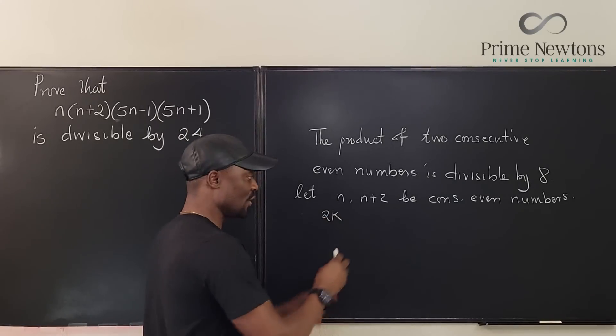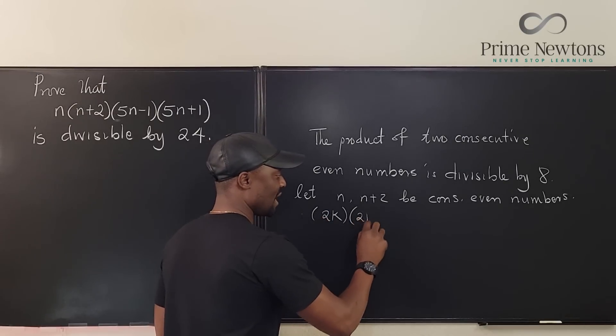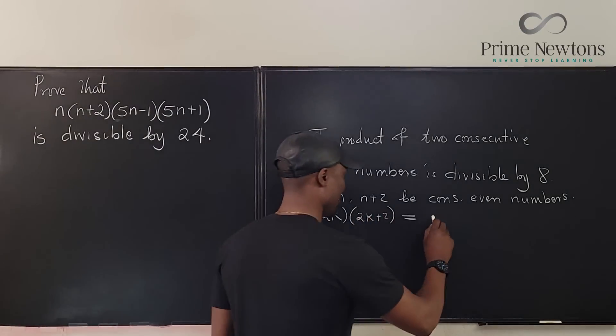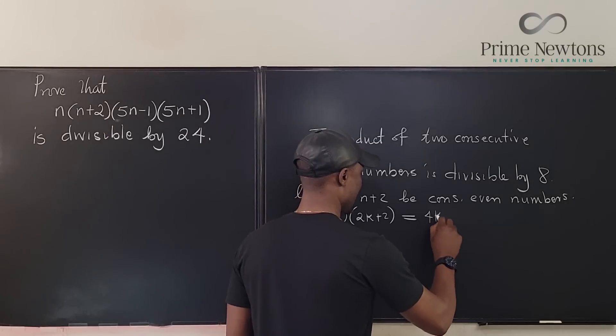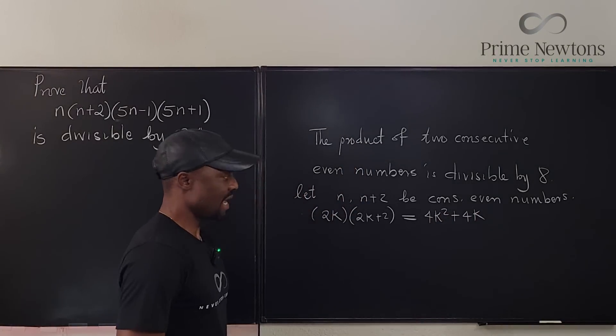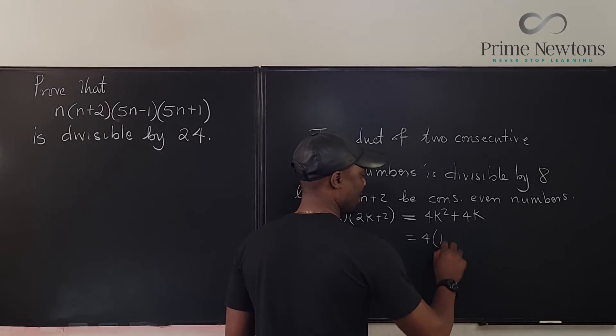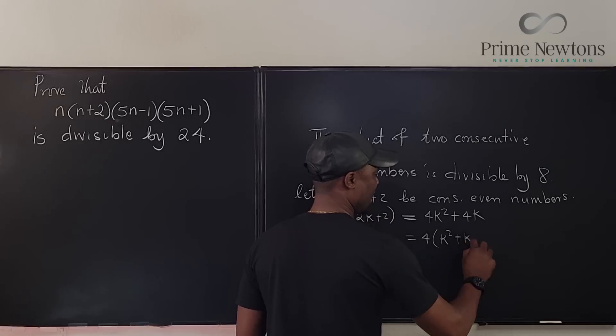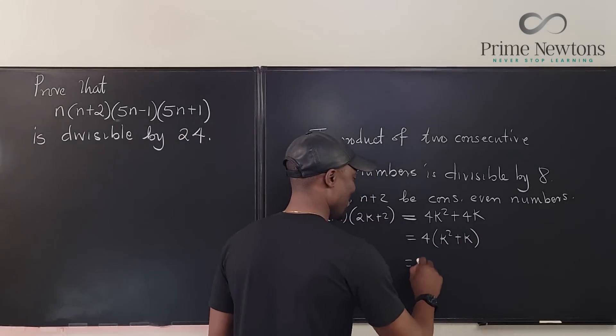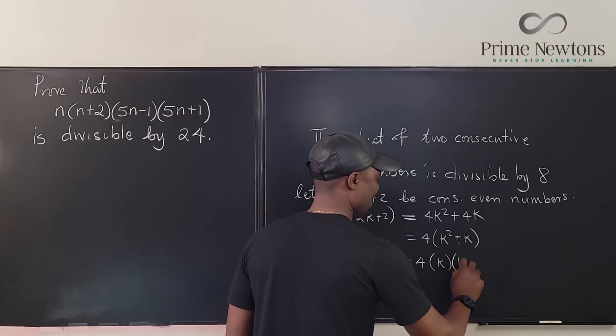Remember this is an even number so it is 2k times this is going to be 2k plus 2. If we multiply these two we're going to end up with 4k squared plus 4k. Is that it? Yes. Pull out 4. What do you get? You get 4 times k squared plus k, which you can rewrite as equal to 4 times k times k plus 1.